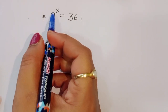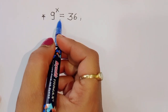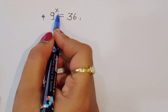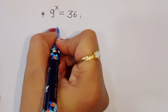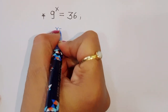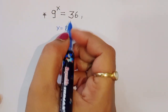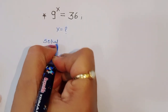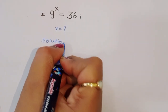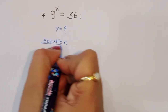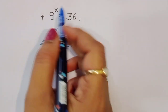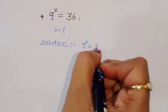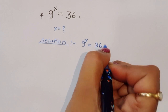The question is: given 9 power x is equal to 36, we have to find out the value of x. Let's see the solution. First, what is given here: 9 power x is equal to 36.